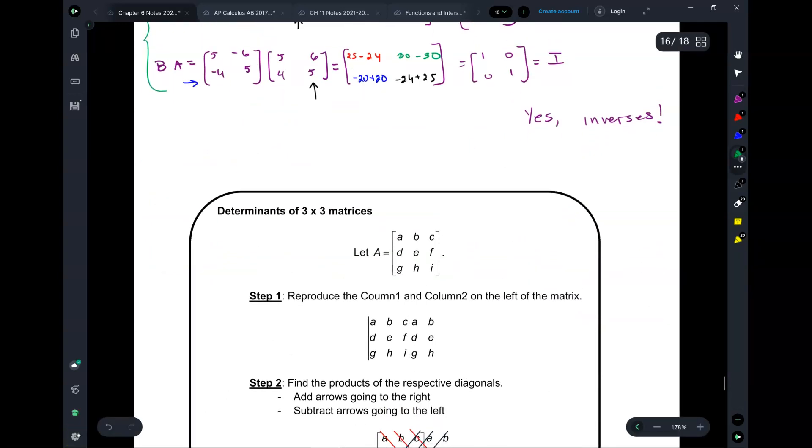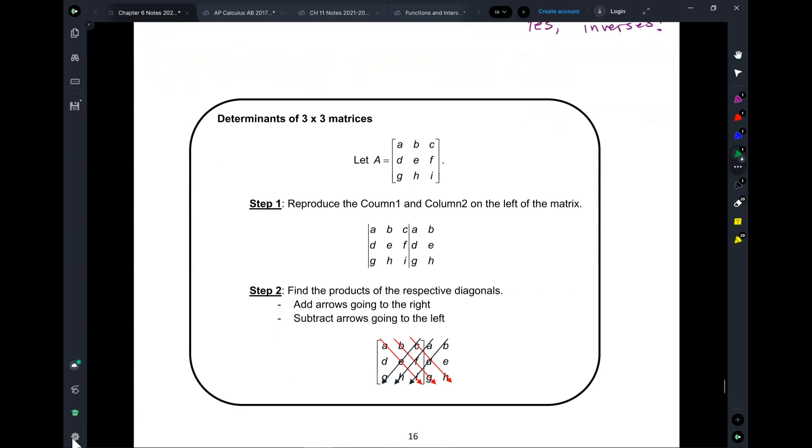Next, what we're going to do is move on from 2 by 2s to 3 by 3s. So moving on to 3 by 3 matrices, we want to find the determinant of a 3 by 3 and then the inverse of a 3 by 3. For the determinant of a 3 by 3, here's what you do. For step 1, you reproduce column 1 and 2 to the left of the matrix. Just clone them over, copy them over. Just copy them over here. There's literally no math there.